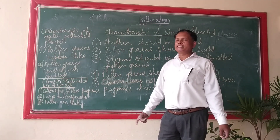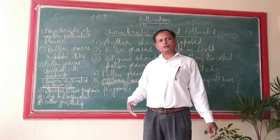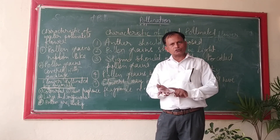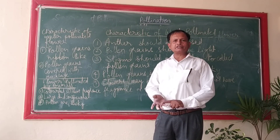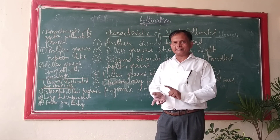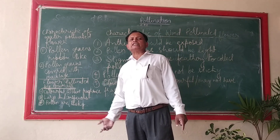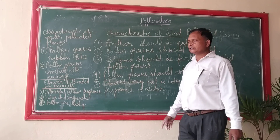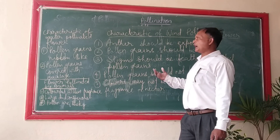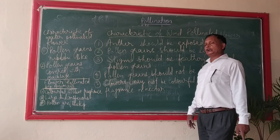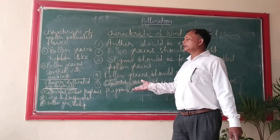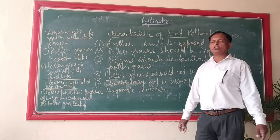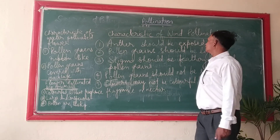In the same connection of pollination, we have studied different types of pollination on the basis of source of pollen grains and on the basis of pollinating agent. In this class, we will discuss the characteristics of flowers which are pollinated by either wind, water, or other animals. First, we will study the characteristics of flowers pollinated by wind.